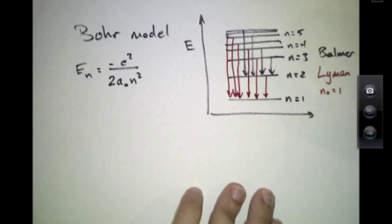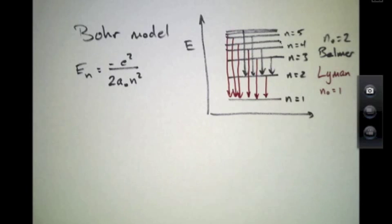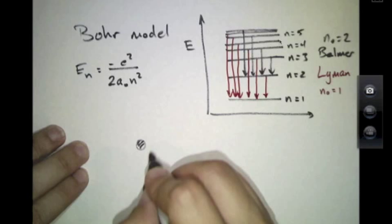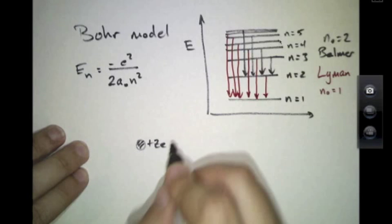The Balmer series, of course, with n0 equals 2. So in this way, the Bohr model is a very intuitive picture with a nucleus plus ZE at its center